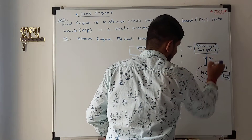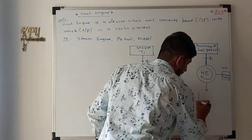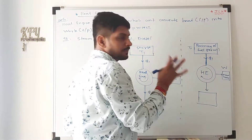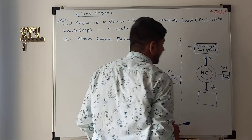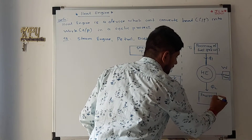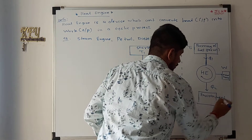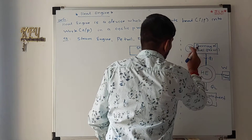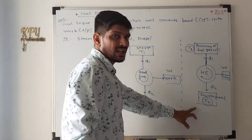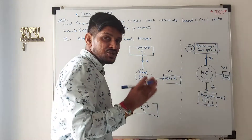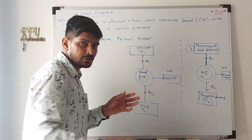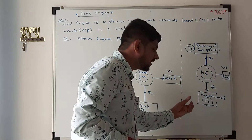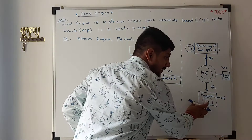And we know, according to the second law, the total heat can never be converted into total work. So whatever heat remains will be given to the environment. The remaining heat will be rejected. In most engine cases, that remaining heat is rejected through the silencer.